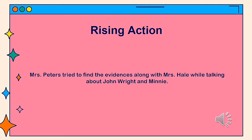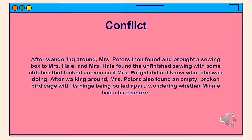Rising action: Mrs. Peters tried to find the evidence along with Mrs. Hale while talking about John Wright and Minnie. Conflict: After wandering around, Mrs. Peters found and brought a sewing box to Mrs. Hale. Mrs. Hale found the unfinished sewing with some stitches that looked uneven, as if Mrs. Wright did not know what she was doing. Mrs. Peters also found an empty broken bird cage with its hinge being pulled apart, wondering whether Minnie had a bird before.